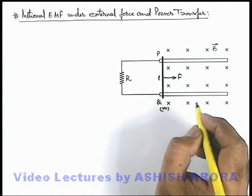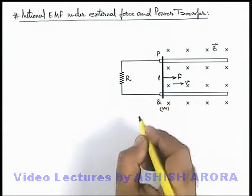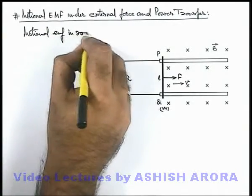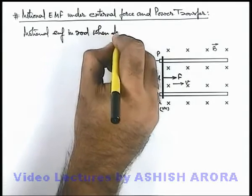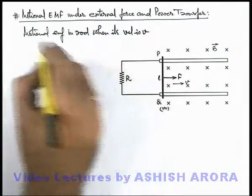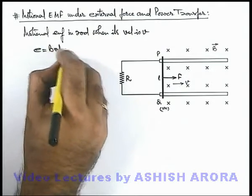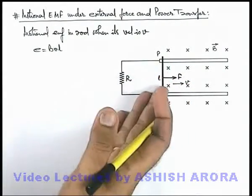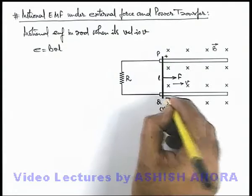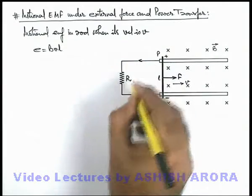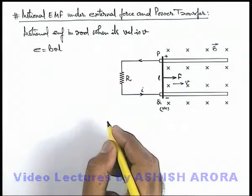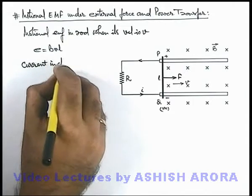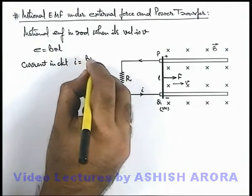The rod will start accelerating, and when it attains a speed v, we can directly write the motional EMF in the rod when its velocity is v. This can be directly written as BvL. By the right-hand palm rule, the free electrons of the rod will experience a downward force, so the upper end is positive and the lower end is negative. This induces a current i in the resistance, and we can write the current in the circuit as BvL divided by R.